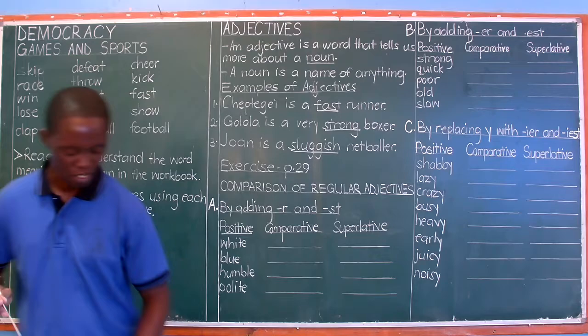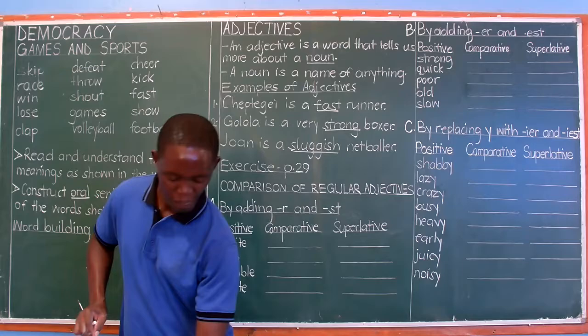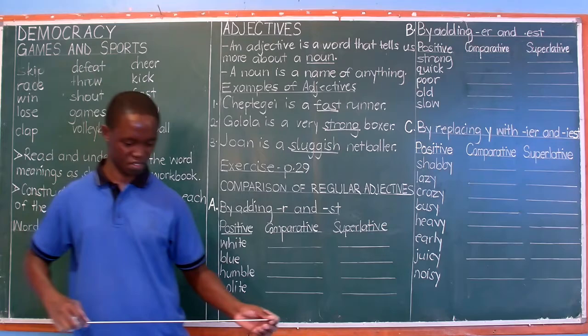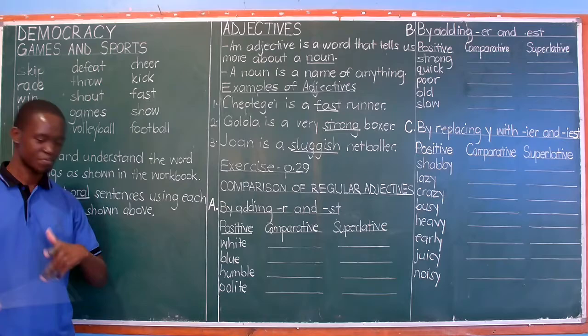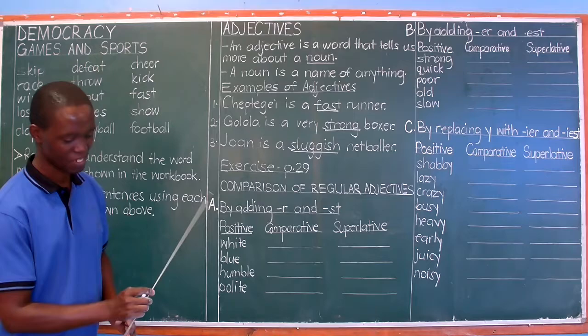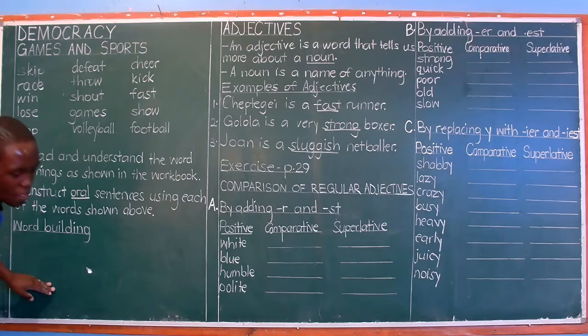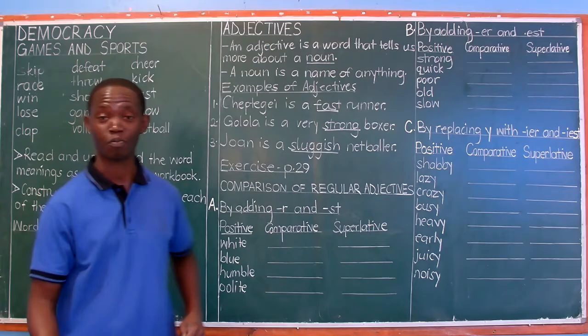Word building — that's where we are. In word building, we want to look at how words can change from one form to another, maybe from one part of speech to another. According to our workbook, we are guided to change different verbs to different forms. We have the verb 'clap' as our example, number one. We are on page 28 right now.